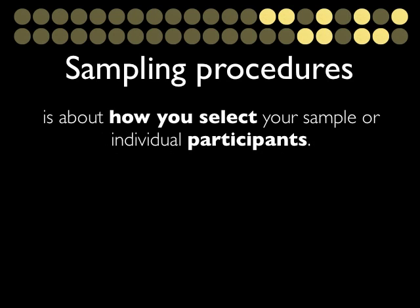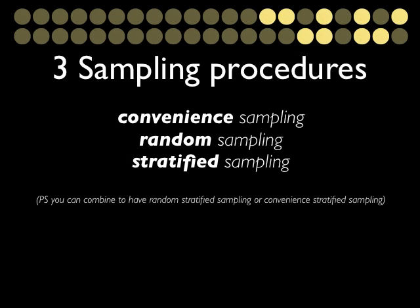Sampling procedures refer to how you select your sample or individual participants. There are three main sampling procedures: convenience sampling, random sampling, and stratified sampling. You can also combine some of these — for example, random stratified sampling or convenience stratified sampling. We'll talk more about that later.